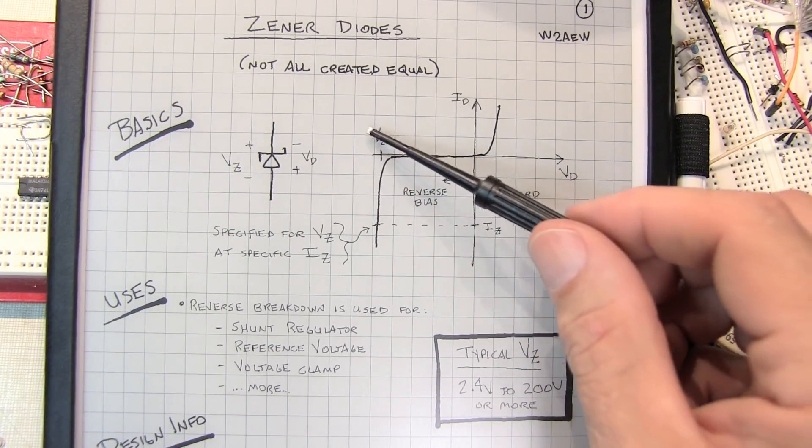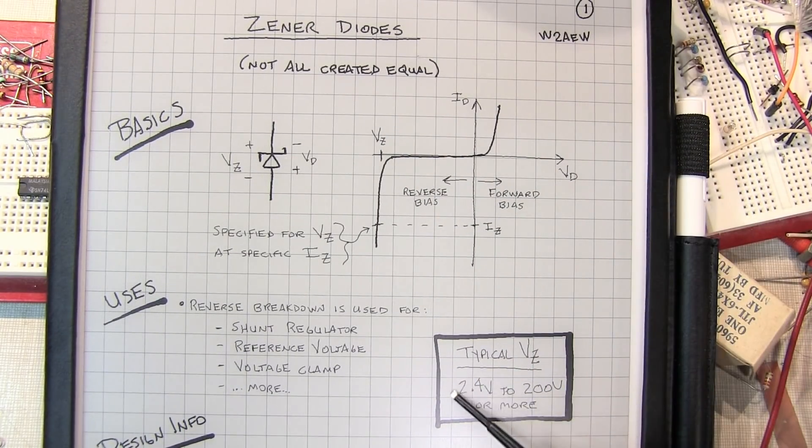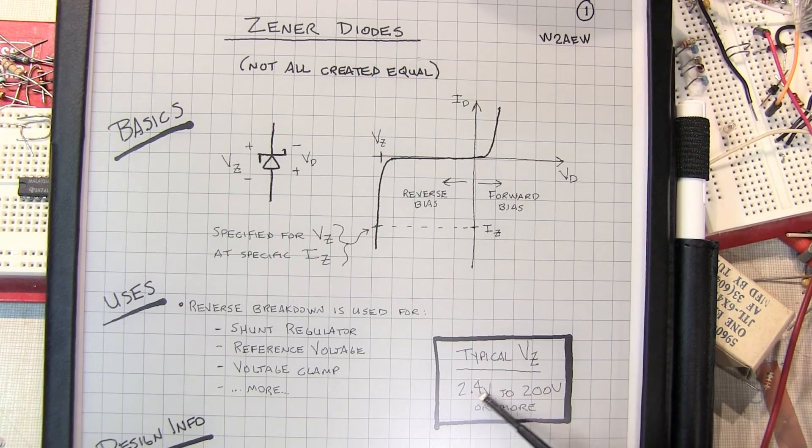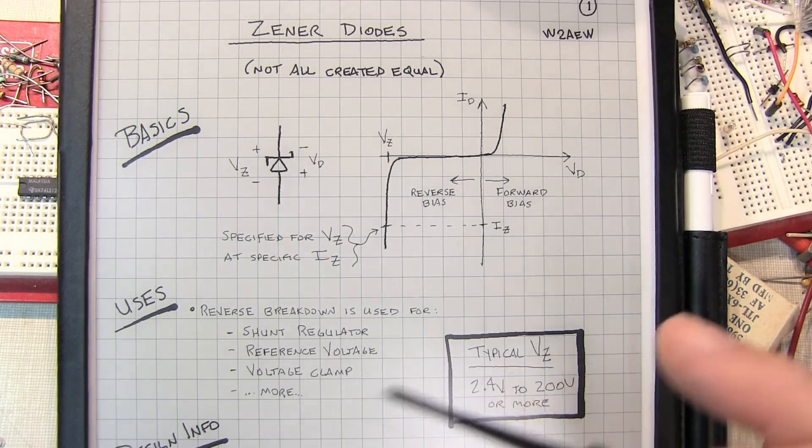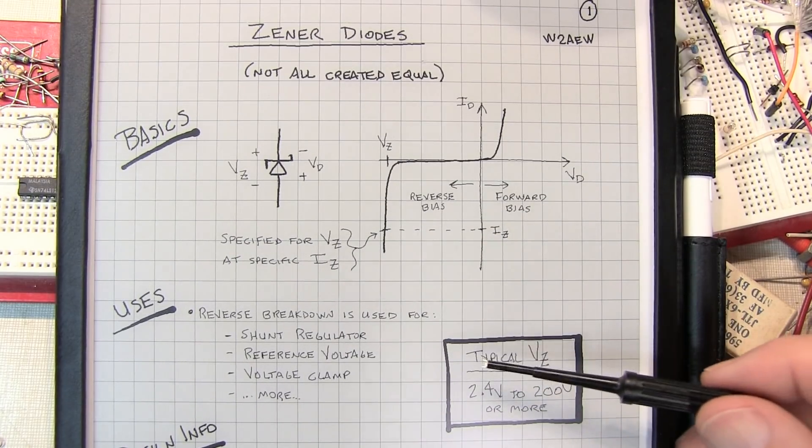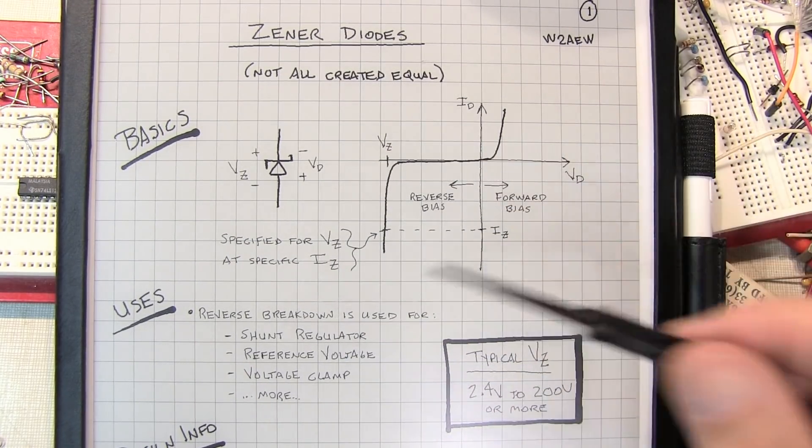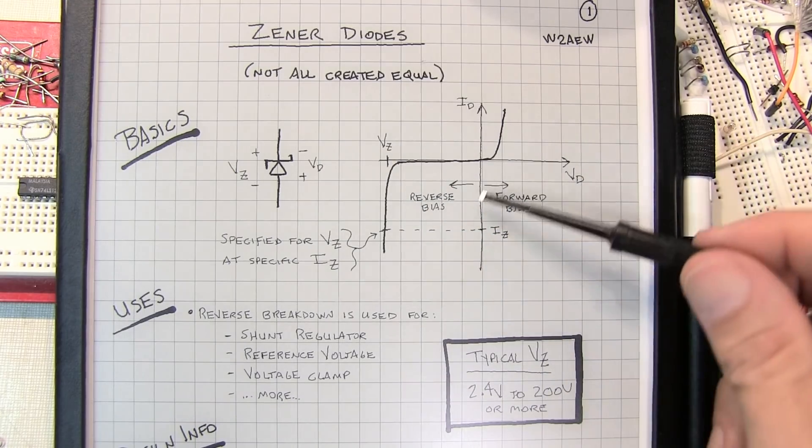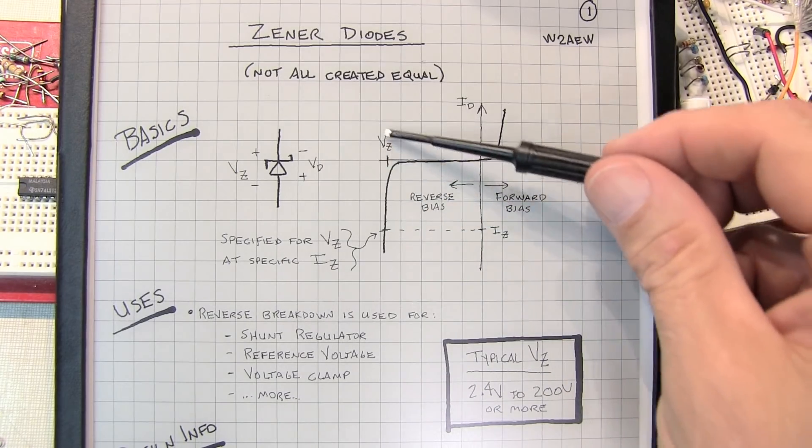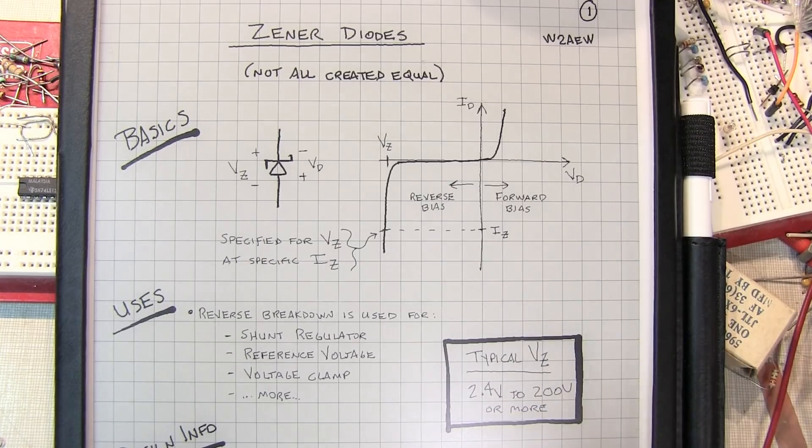Typical Zener diodes have got a Zener voltage ranging from about 2.4 to 2.5 volts to even 200 volts or more, depending on the particular diode. Basically it's just a diode that's designed to break down at a particular voltage in reverse bias. So let's take a look at how we would design something like this into a circuit.